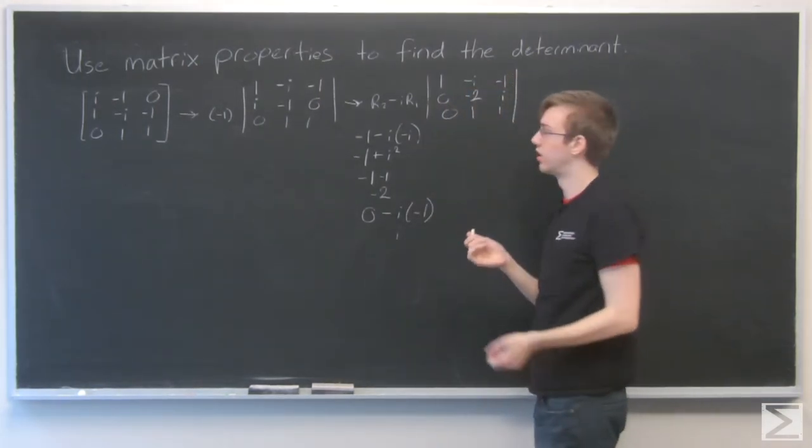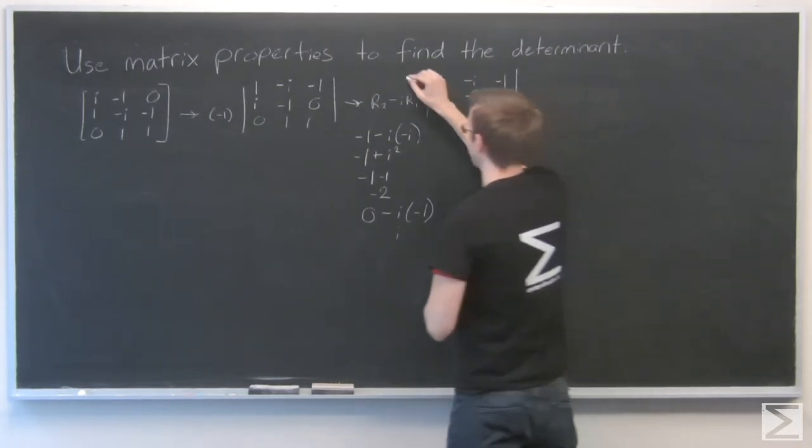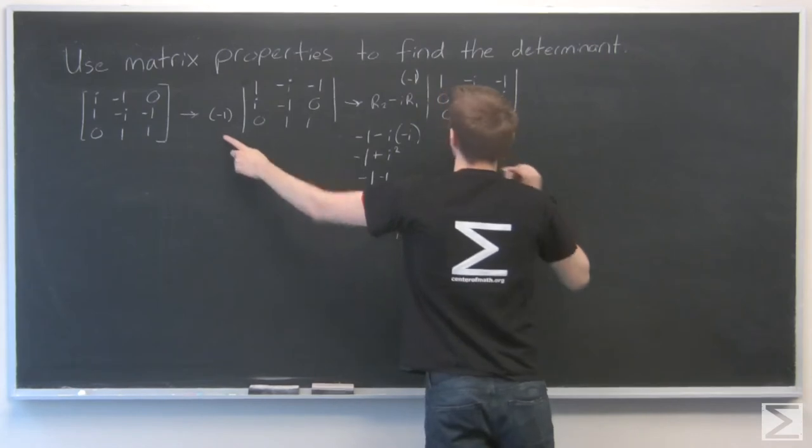Because I just subtracted a row, I don't need to multiply anything by this, but I need to keep that minus 1 that I got from switching rows.